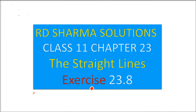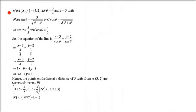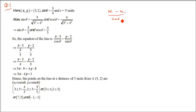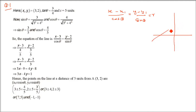We are taking R.D. Sharma solutions, class 11, chapter 23 — the straight lines, exercise 23.8. This is question number 1. Before we go ahead, most of the questions will be using the same formula: x minus x1 by cos theta equals y minus y1 by sin theta, and this equals R. Also, y minus y1 equals tan theta times x minus x1. We have already seen this.